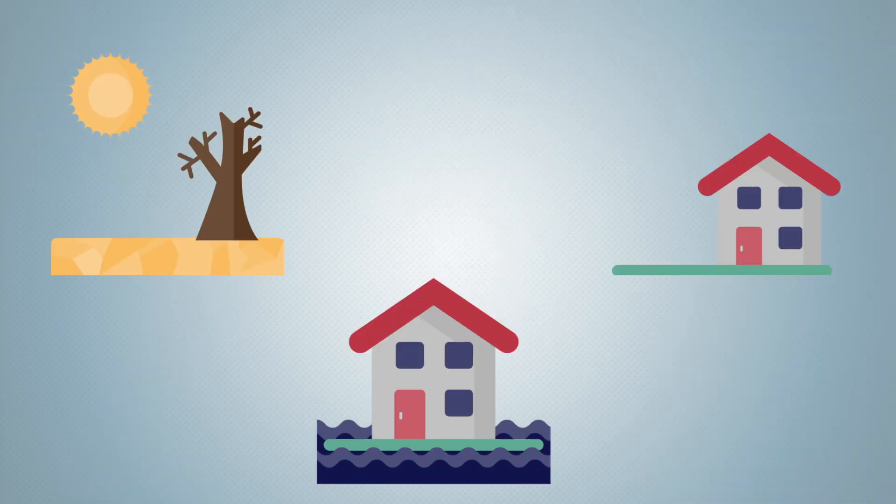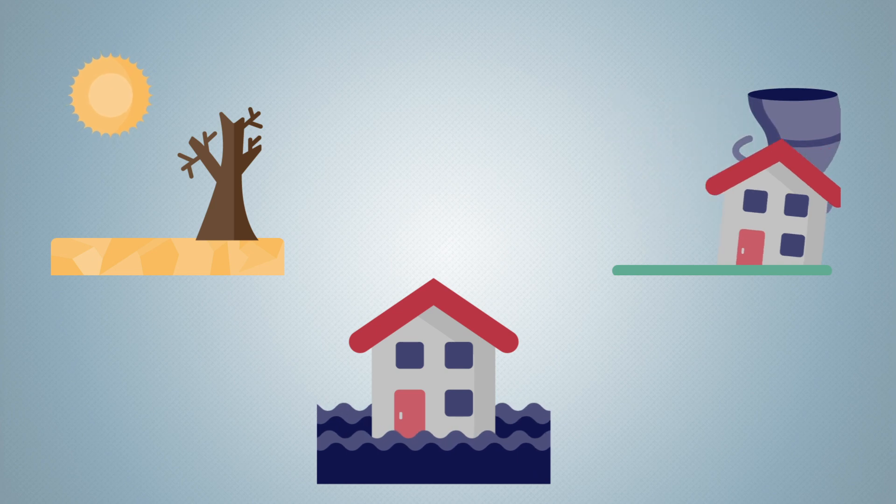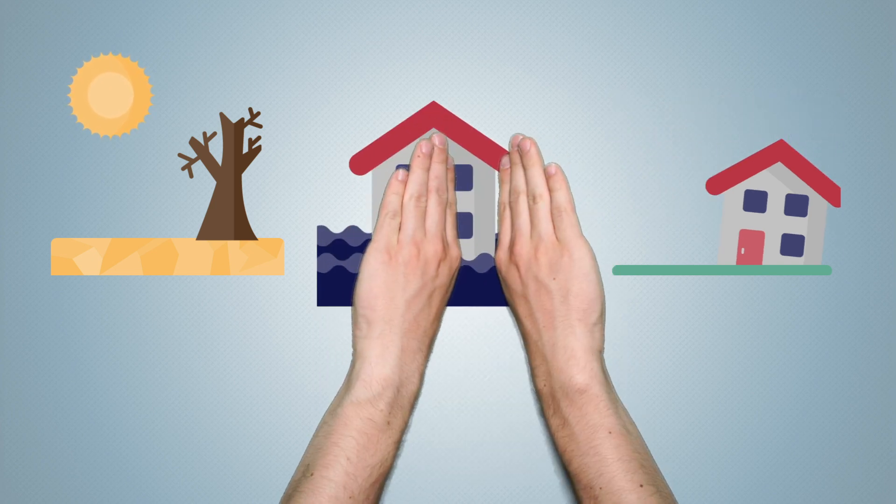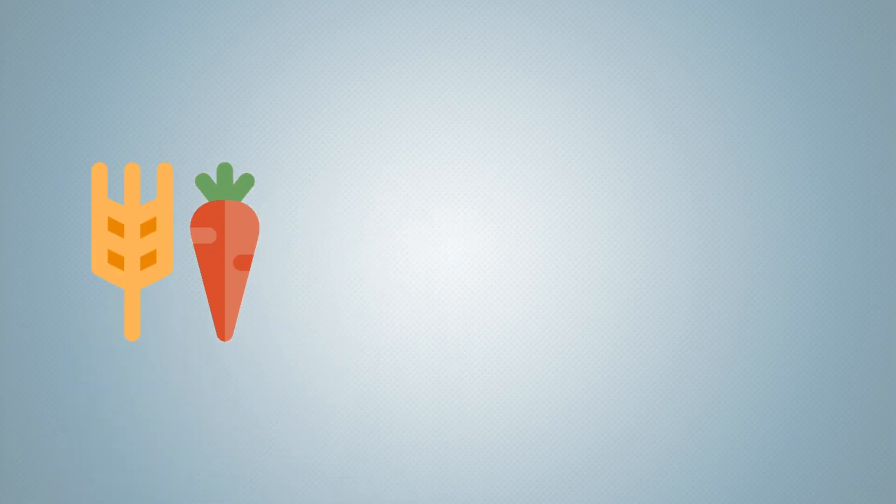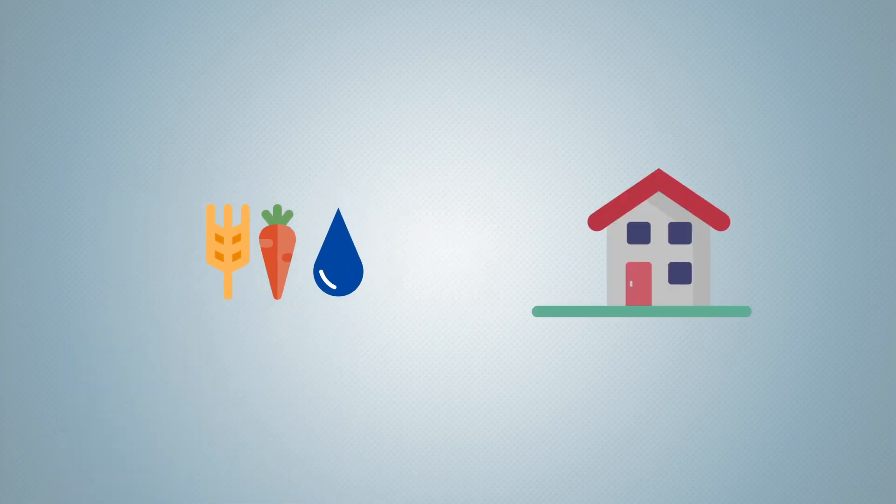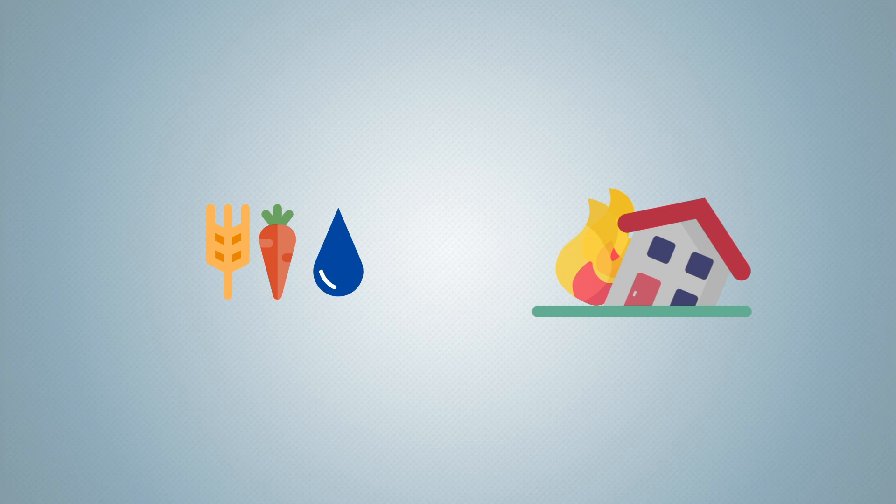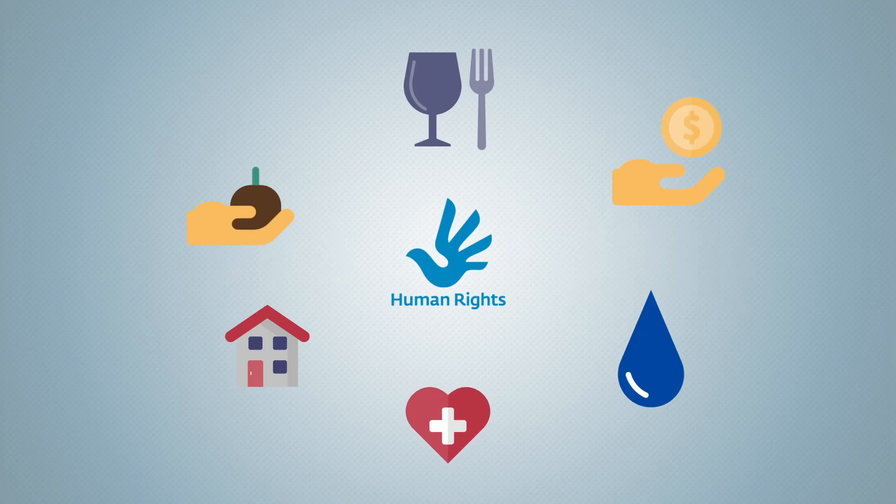Droughts, floods and storms pose a threat to the livelihoods of the poor and vulnerable. Food and drinking water are becoming scarce. Houses and infrastructure are being destroyed. Basic human rights are at risk.